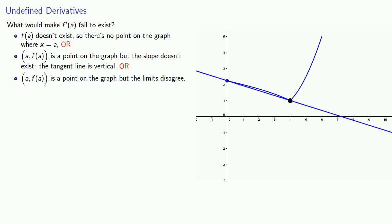we have a point on the graph and maybe we have the slope of a secant line, but the limits disagree. If we approach the point from the left we might get one slope, but if we approach the limit from the right we might get a different slope. And so here's another possibility.